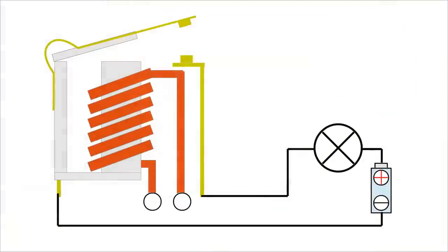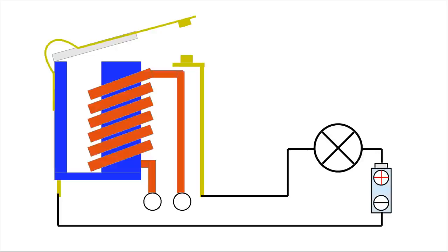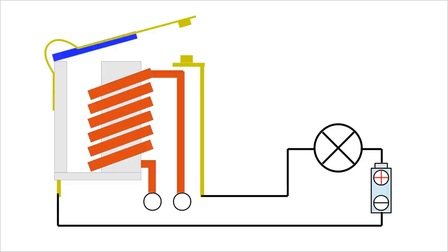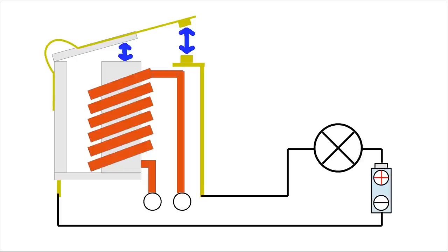Besides a reed switch, other switching mechanisms can also be controlled by coils. Usually, the wire of the coil is wrapped around one leg of a U-shaped core of soft iron, providing a low resistive path for magnetic flux. A movable iron armature with one or more sets of contacts is held in place at the top of the core by a springy conductive material. While no current is running through the coil, there is an air gap at one end of the armature and the contacts of the relay are open. There are two electric circuits with complete electrical isolation.